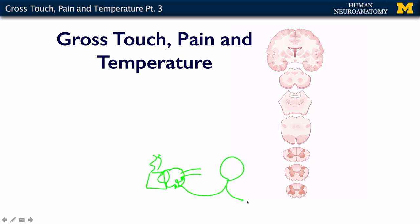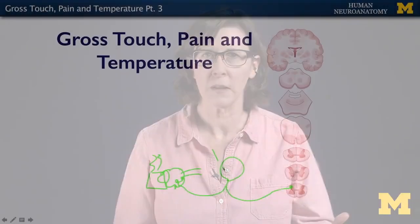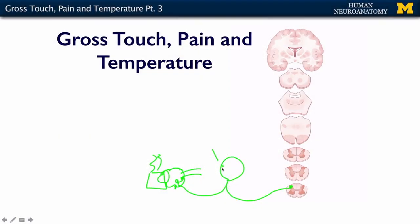That dorsal root ganglion neuron then sends that information into the dorsal horn. This is neuron number one in the chain. I like to think of it as a relay race. You've got neuron one, which picks up the baton — which is the signal from whatever sensation is out here — and relays it to neuron number two, which is in the dorsal horn gray matter.